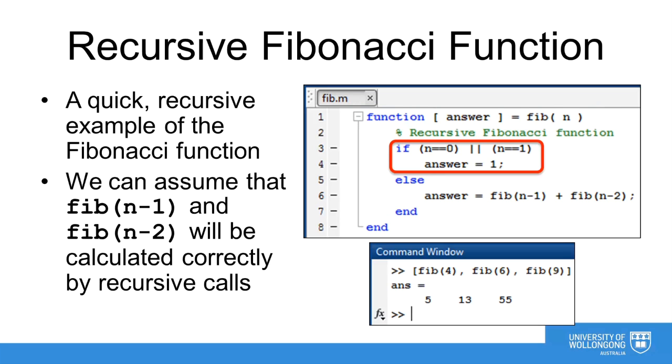To ensure our recursion will stop at some point, we need to include our base cases. This means that when Fib is called with n equals 0 or n equals 1, it will immediately return the answer of 1.